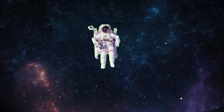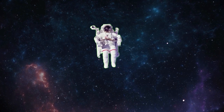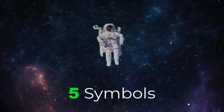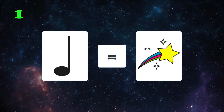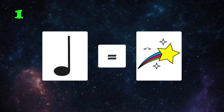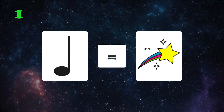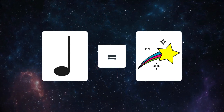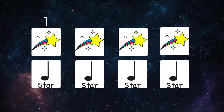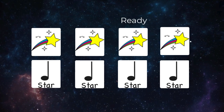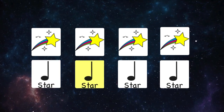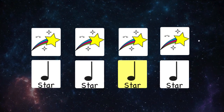While saying these intergalactic rhythms, you could come across five different symbols. When you see a quarter note, you're going to say the word 'star.' Let's try four of these in a row. One, two, ready, go. Star, star, star, star.